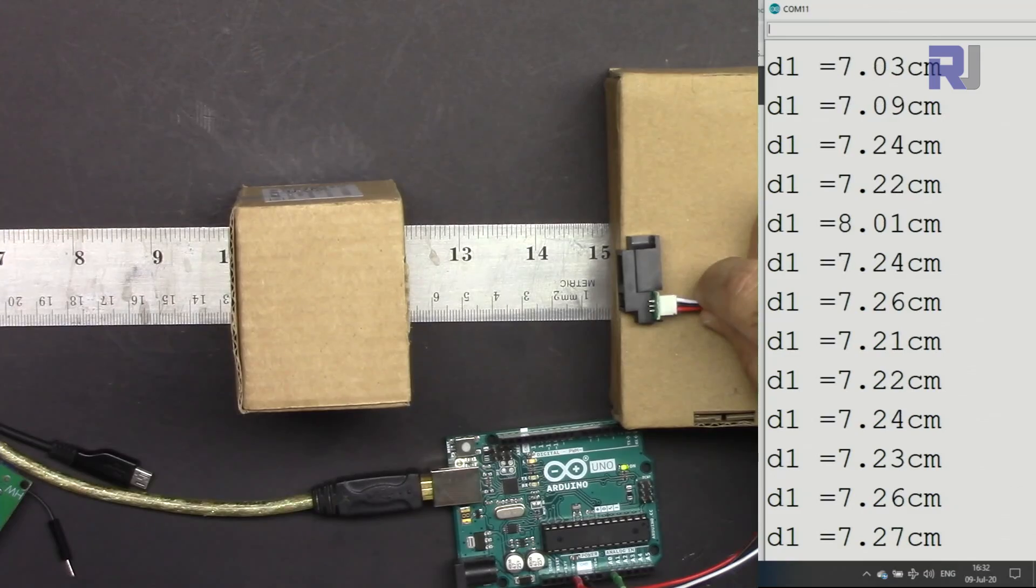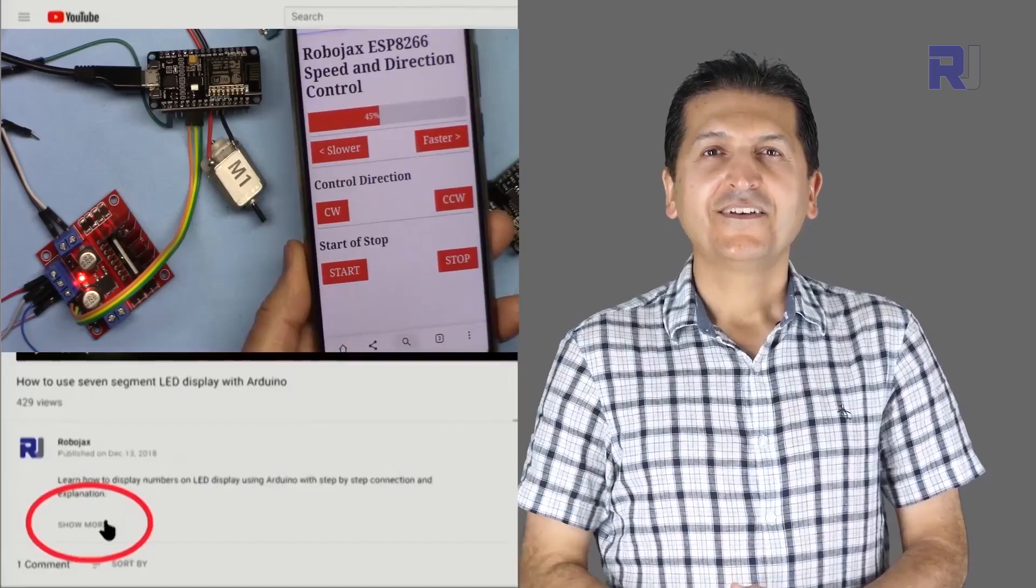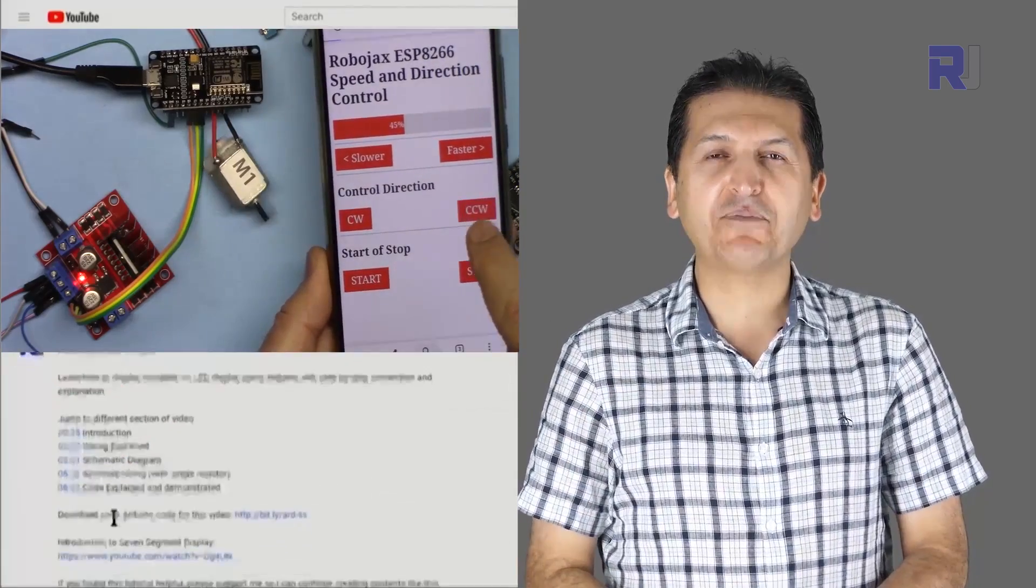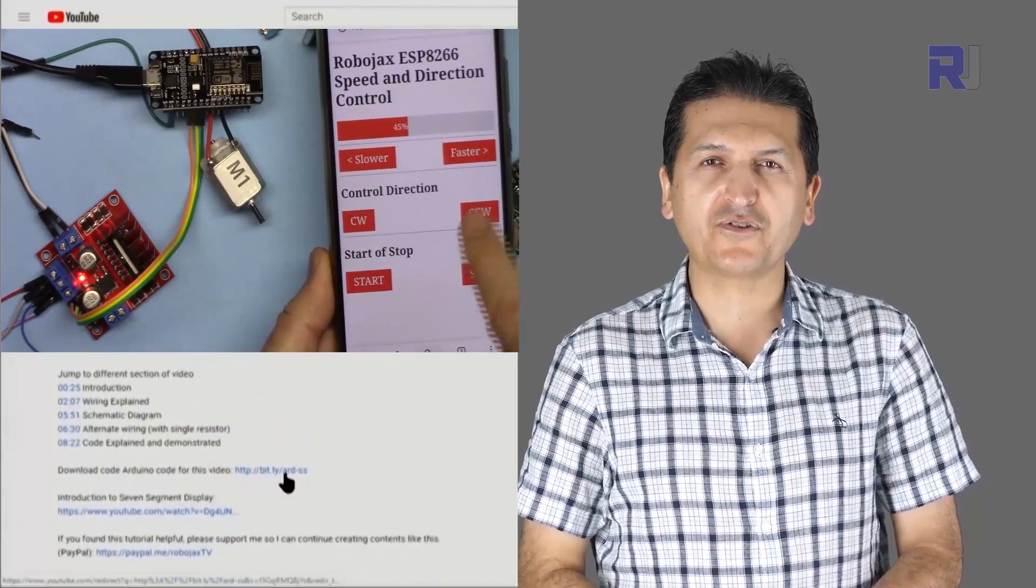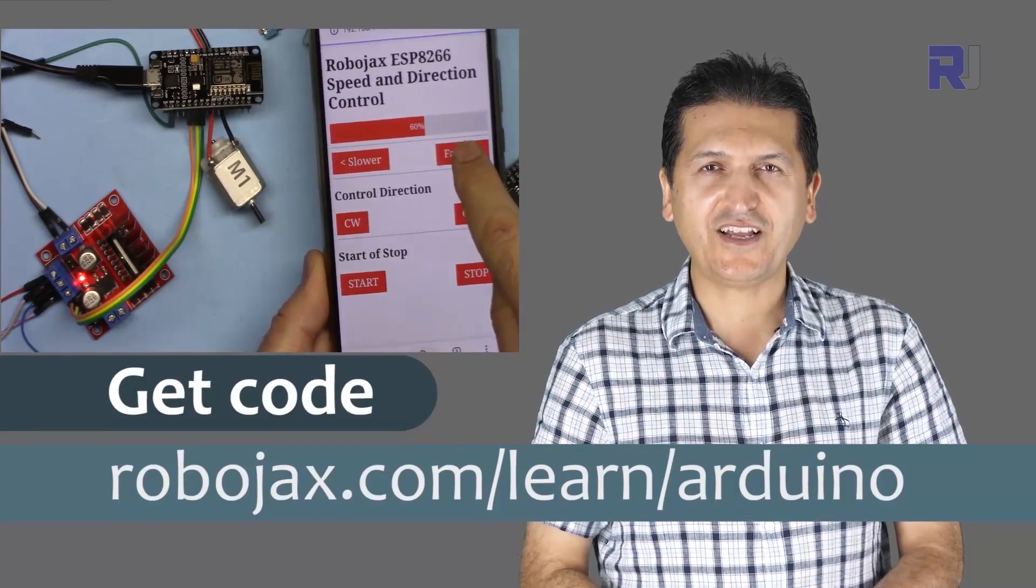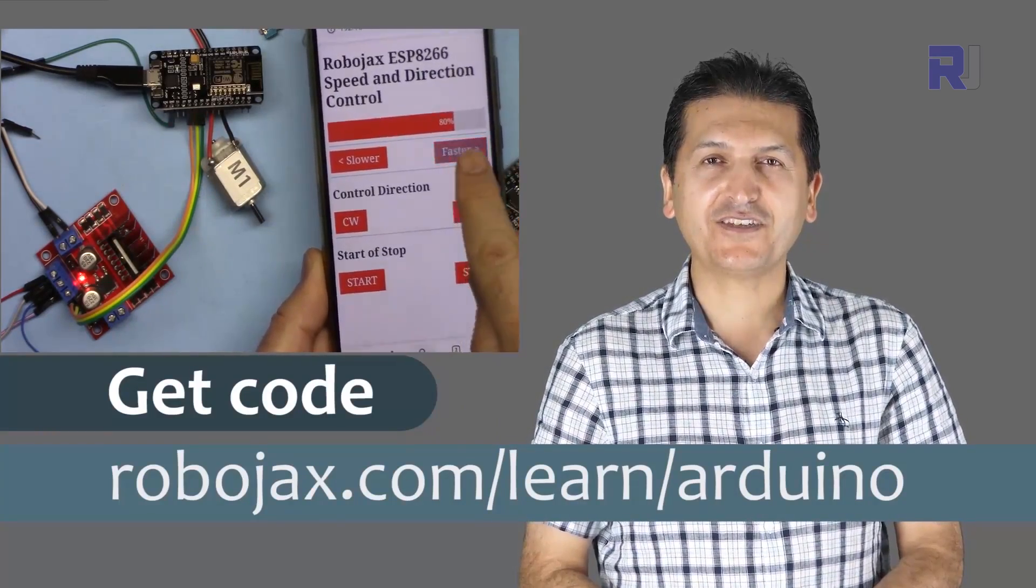As you can see, we are at around 7 centimeters and we are reading that 7 centimeters. You can get the code for this by clicking at the link below the video in the description, which will take you to robojax.com/learn/Arduino. Let's get started with this.